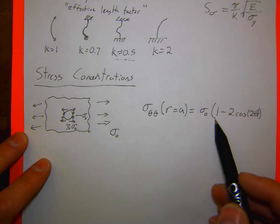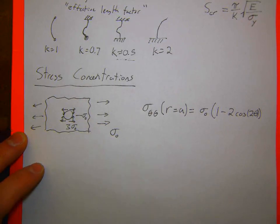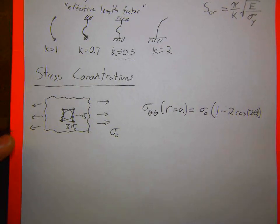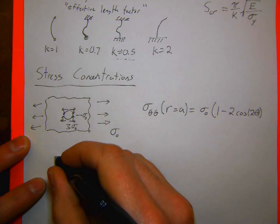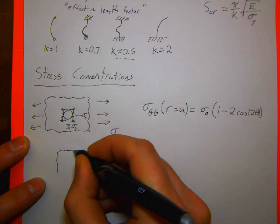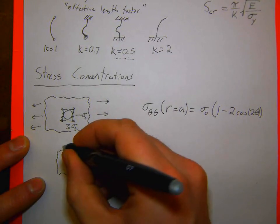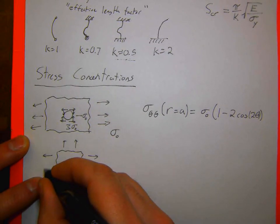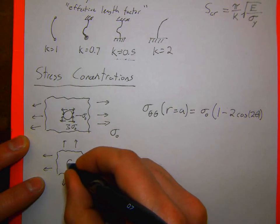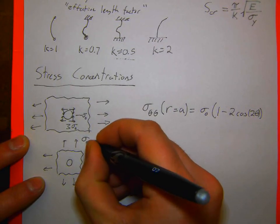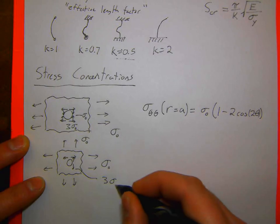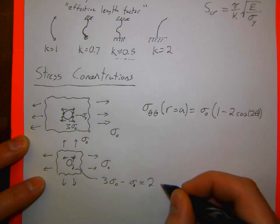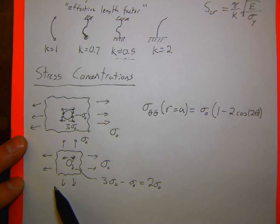Know the stress concentrations and how to do superpositions. For example, with biaxial stress σ₀ applied in both directions, the stress at the top of the hole ends up being 3σ₀ − σ₀ = 2σ₀, based on that summation of stress concentrations.